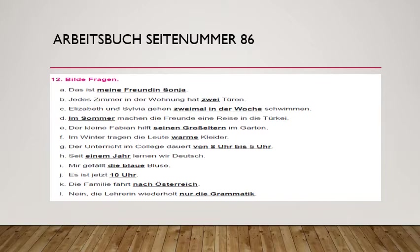Let's see a few examples. A: 'Das ist meine Freundin Sonja' — this is my friend Sonja. We want the answer for 'meine Freundin Sonja', so naturally the question will be 'who is this?' For 'who', the WH question word is 'wer'. So the question is 'Wer ist das?'